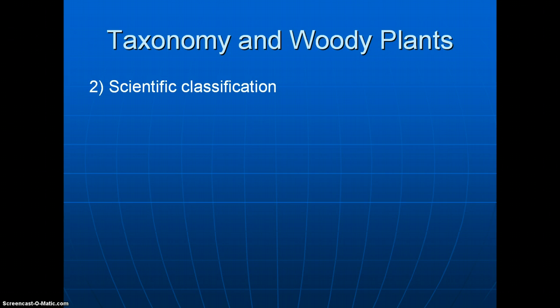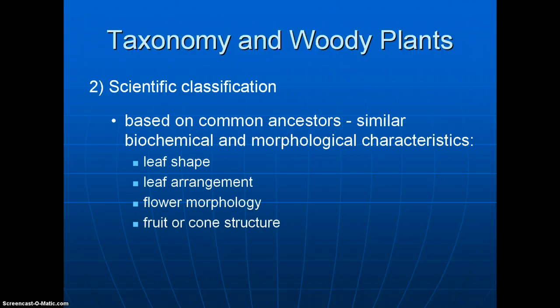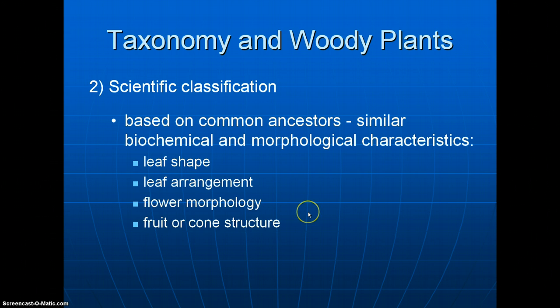The more useful method, when it comes to identifying plants, is the whole notion of scientific classification. This is based on the idea that plants with common ancestors have similar biochemistry and similar makeup, and they also look somewhat similar — they have similar morphological characteristics in common. Things like the shape of the leaf, the way the leaves are arranged on the stem, the way the flowers look, and the fruit or cone structure.